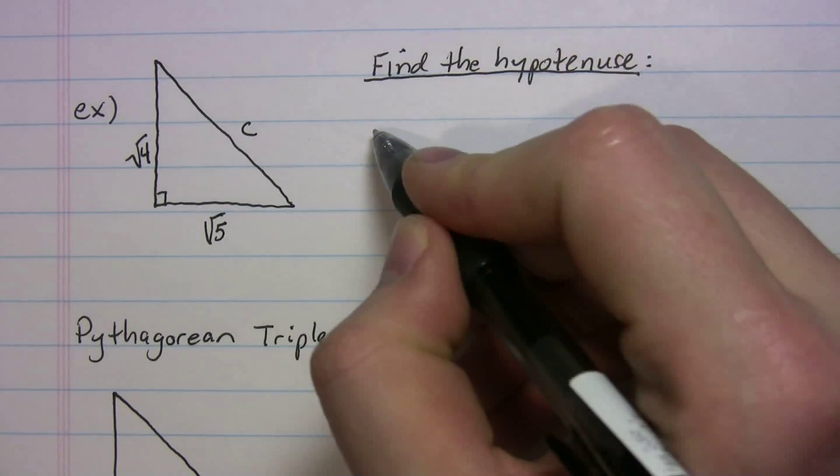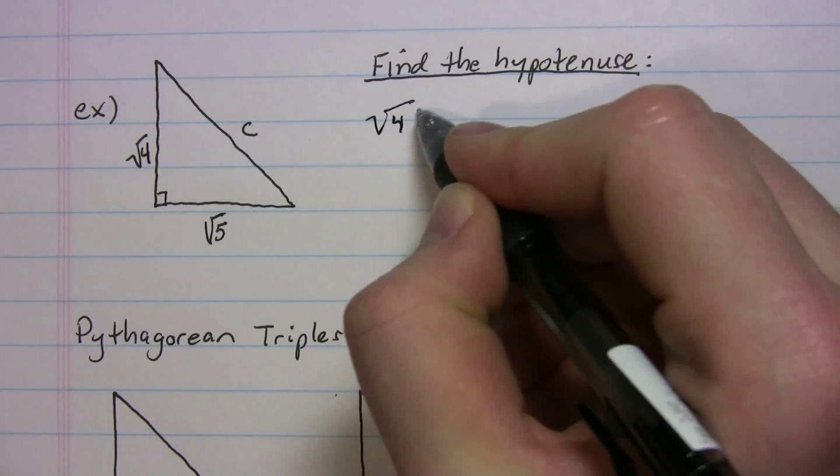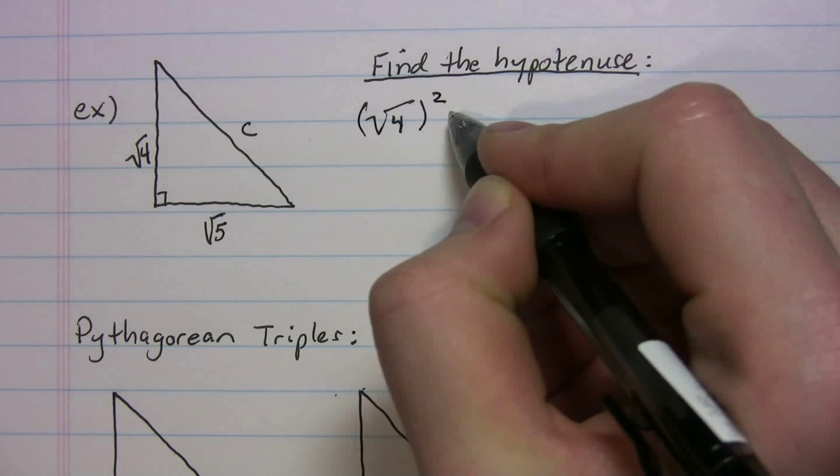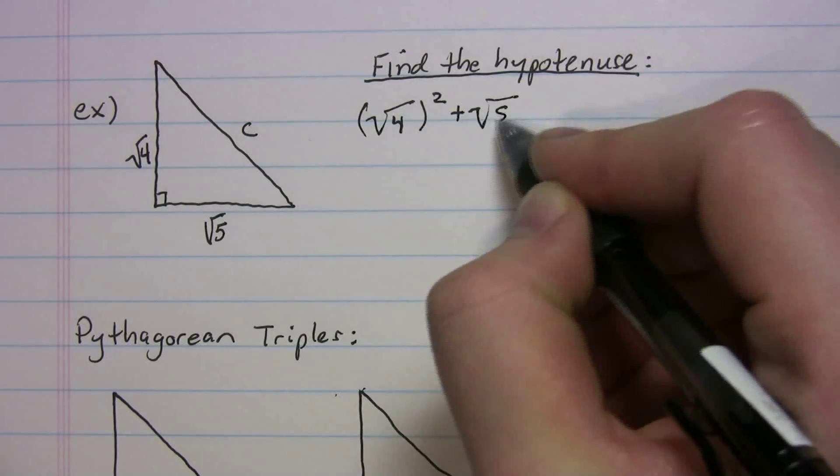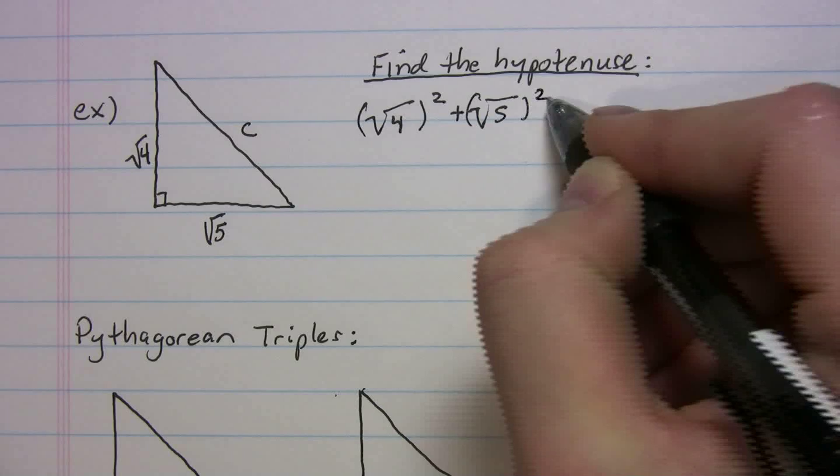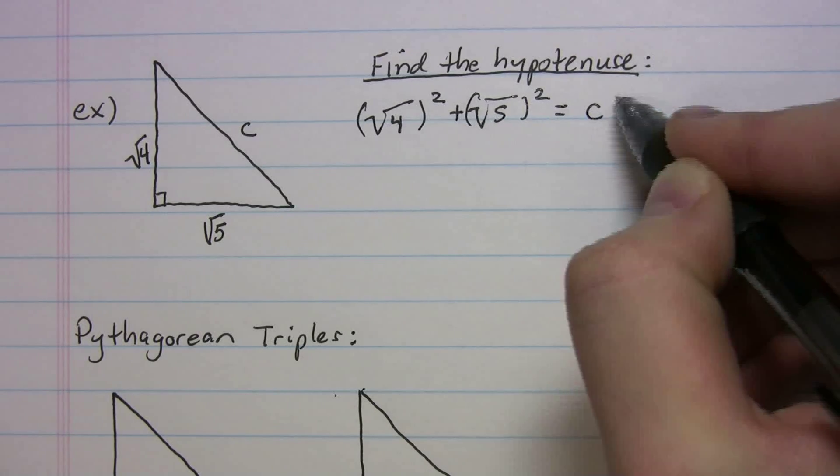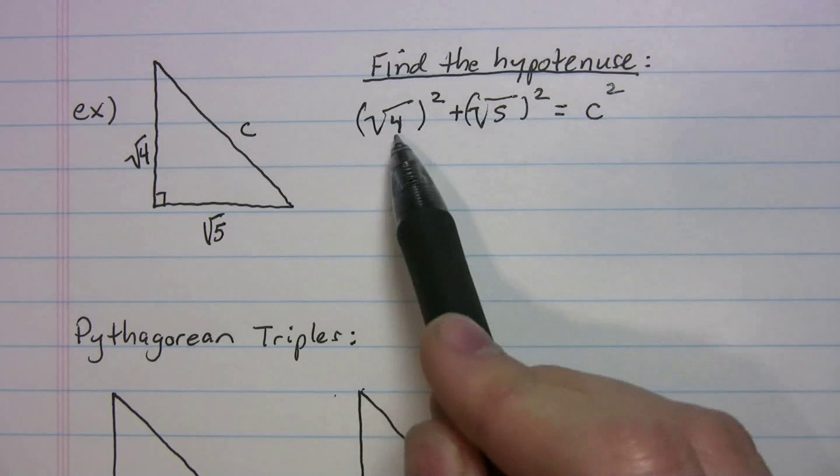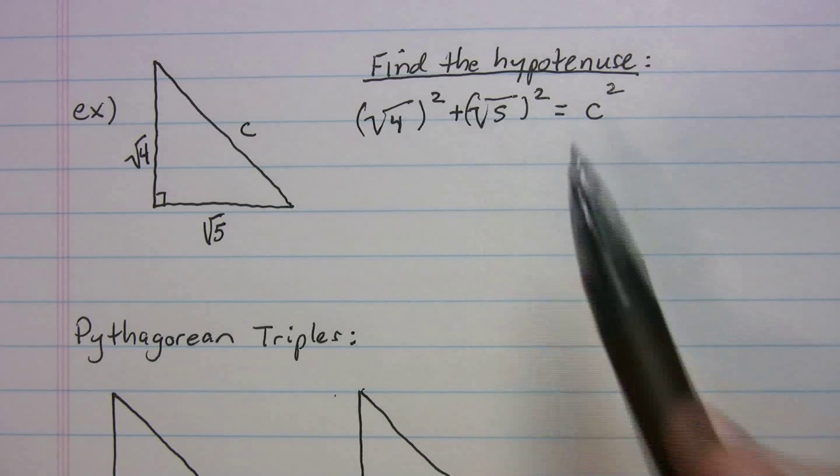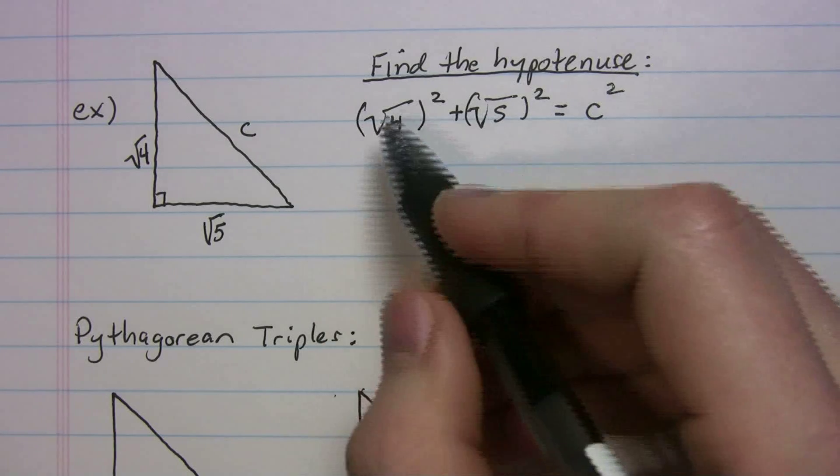So how are you going to set this up? You should have radical four squared plus radical five squared equals c squared. Leg squared plus leg squared equals hypotenuse squared.